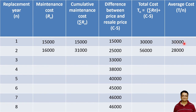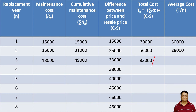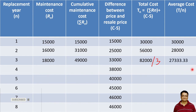In the third year, the maintenance cost is 18,000. The cumulative maintenance cost is the summation of all three years, giving 49,000. Adding the C minus S value gives a total of 82,000. Dividing by three gives 27,333.33. The average cost is still decreasing.